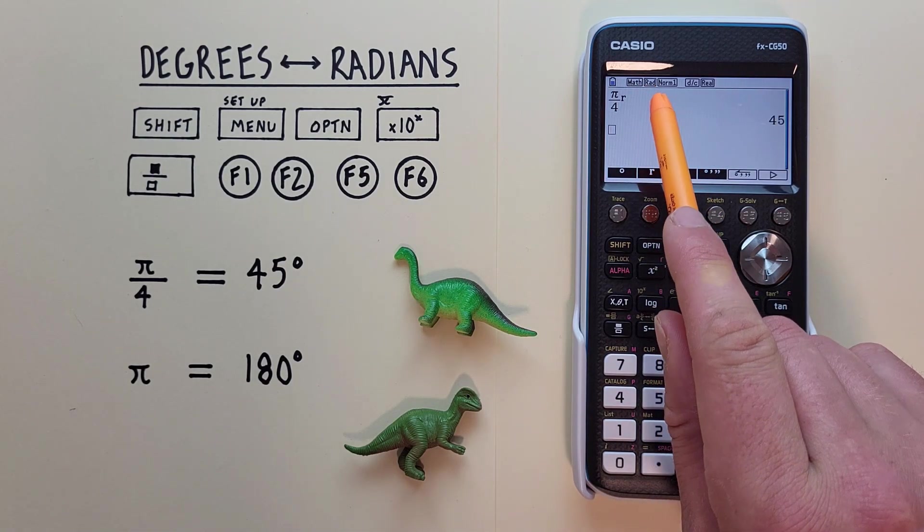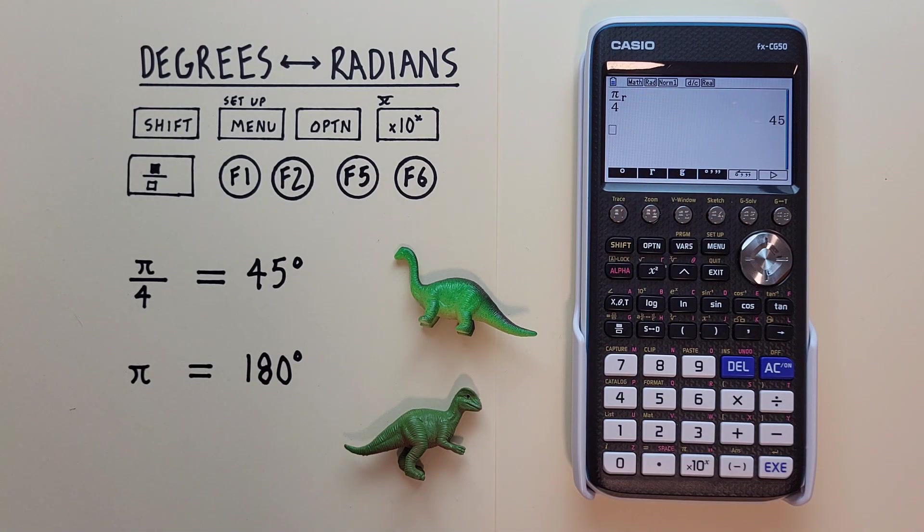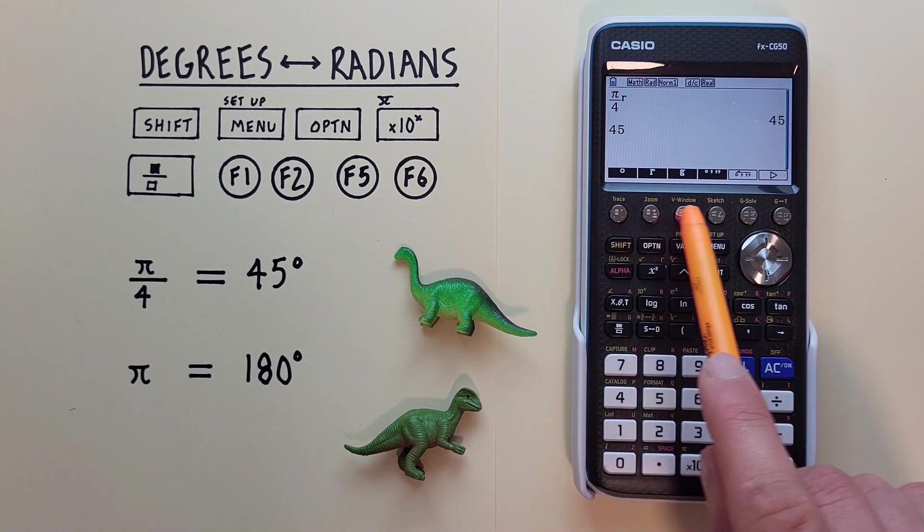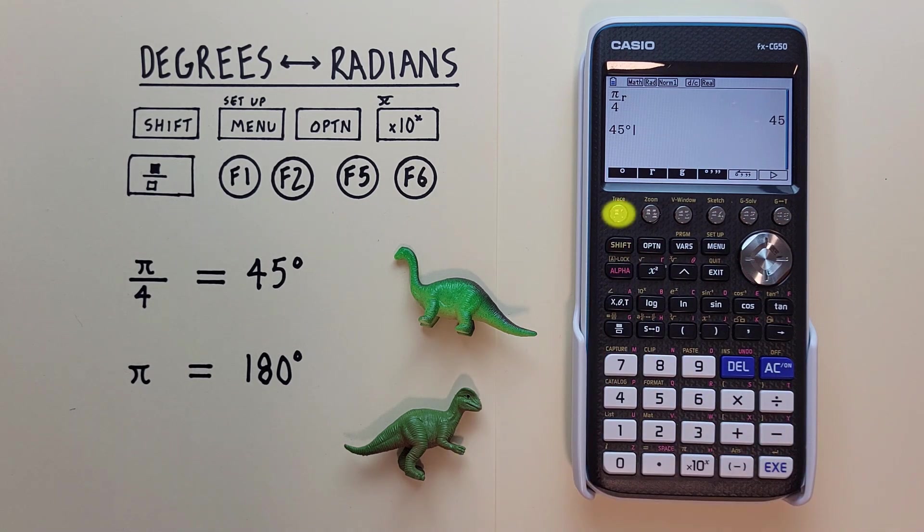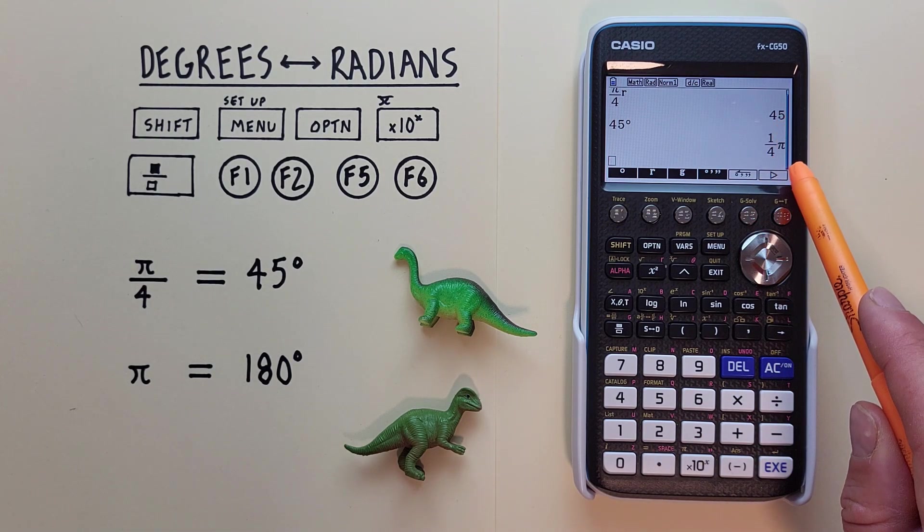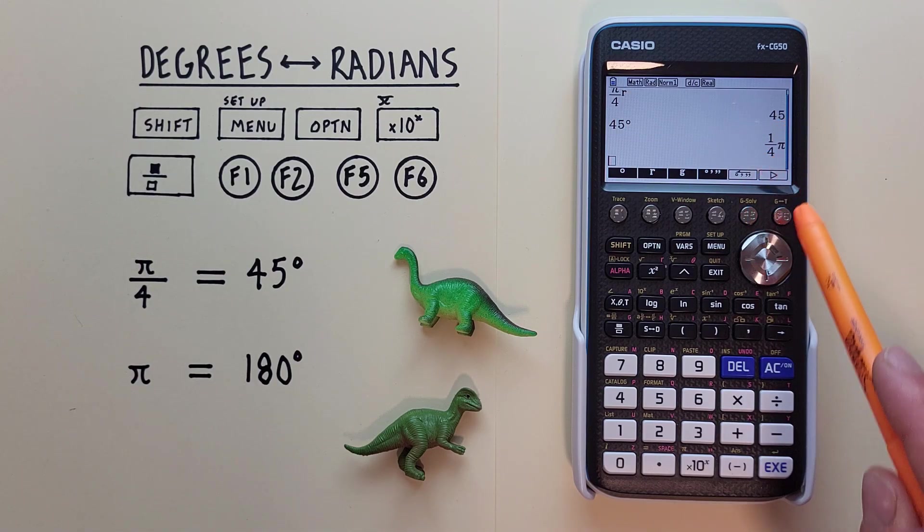We see Rad at the top of our screen, letting us know we're in radian mode. Now if we enter our 45 degrees, and then since we're already in this menu, choose F1 for the degree symbol. And hit EXE. And we see that gives us 1 over 4 pi or pi over 4 radians.